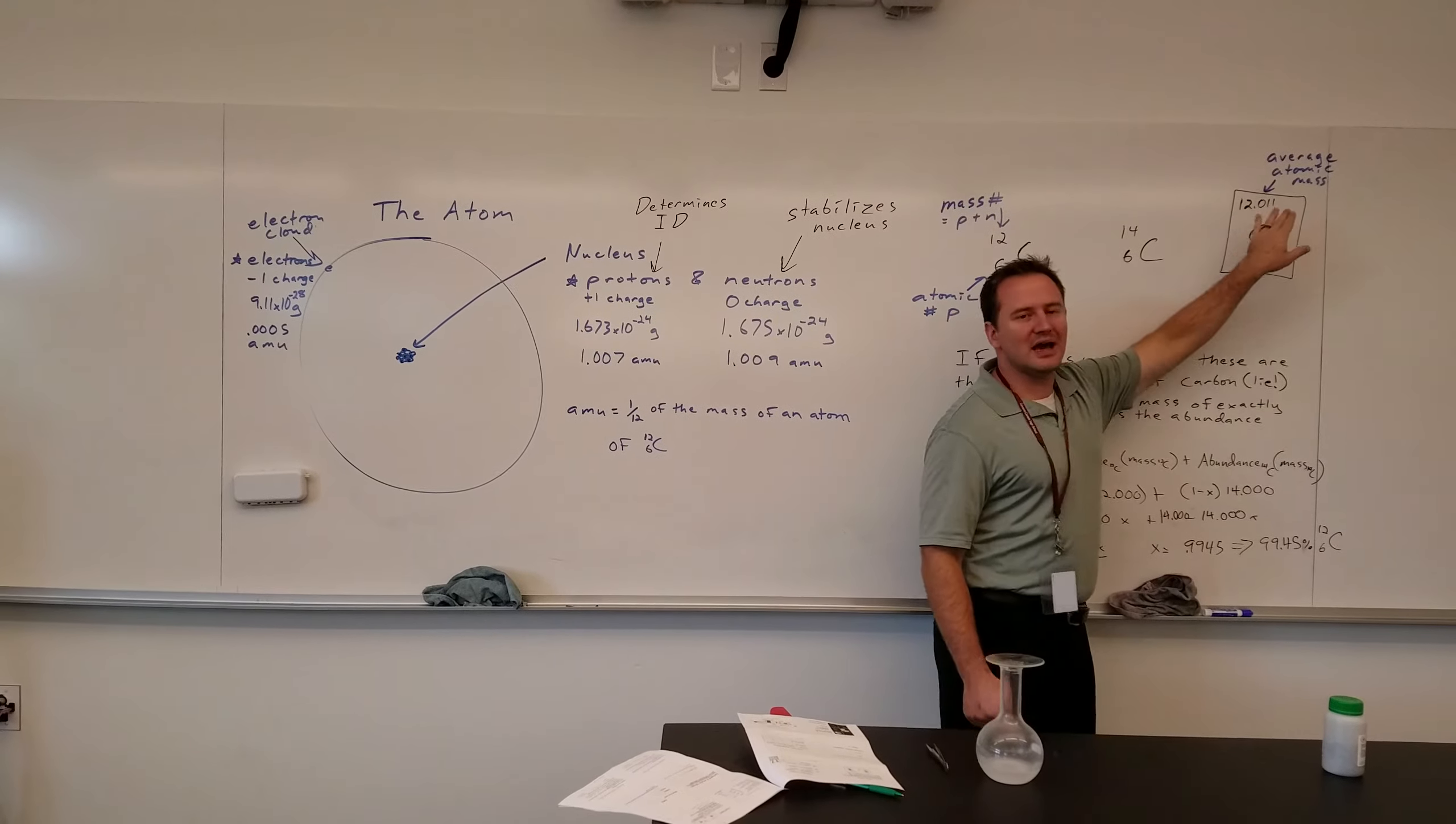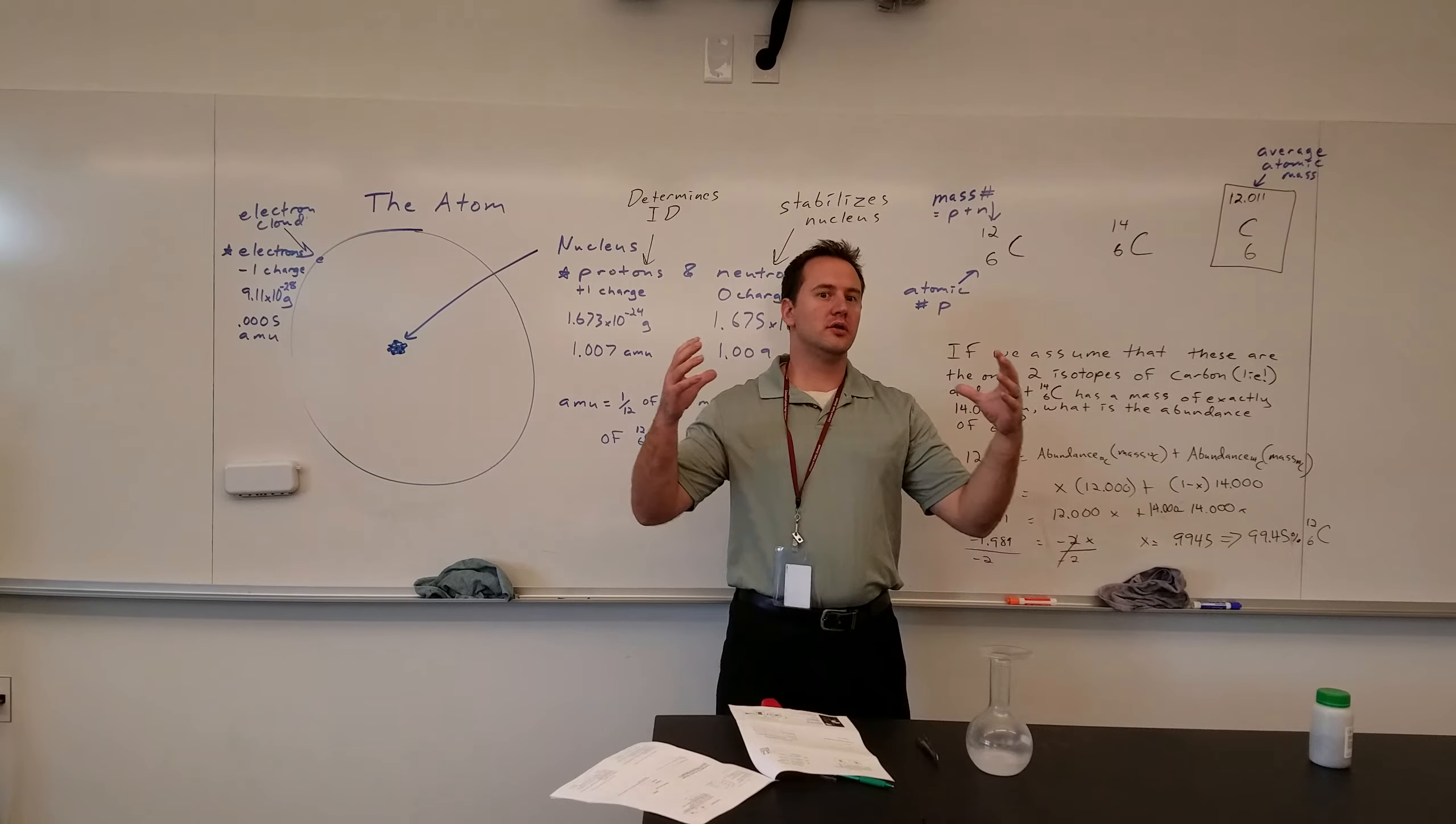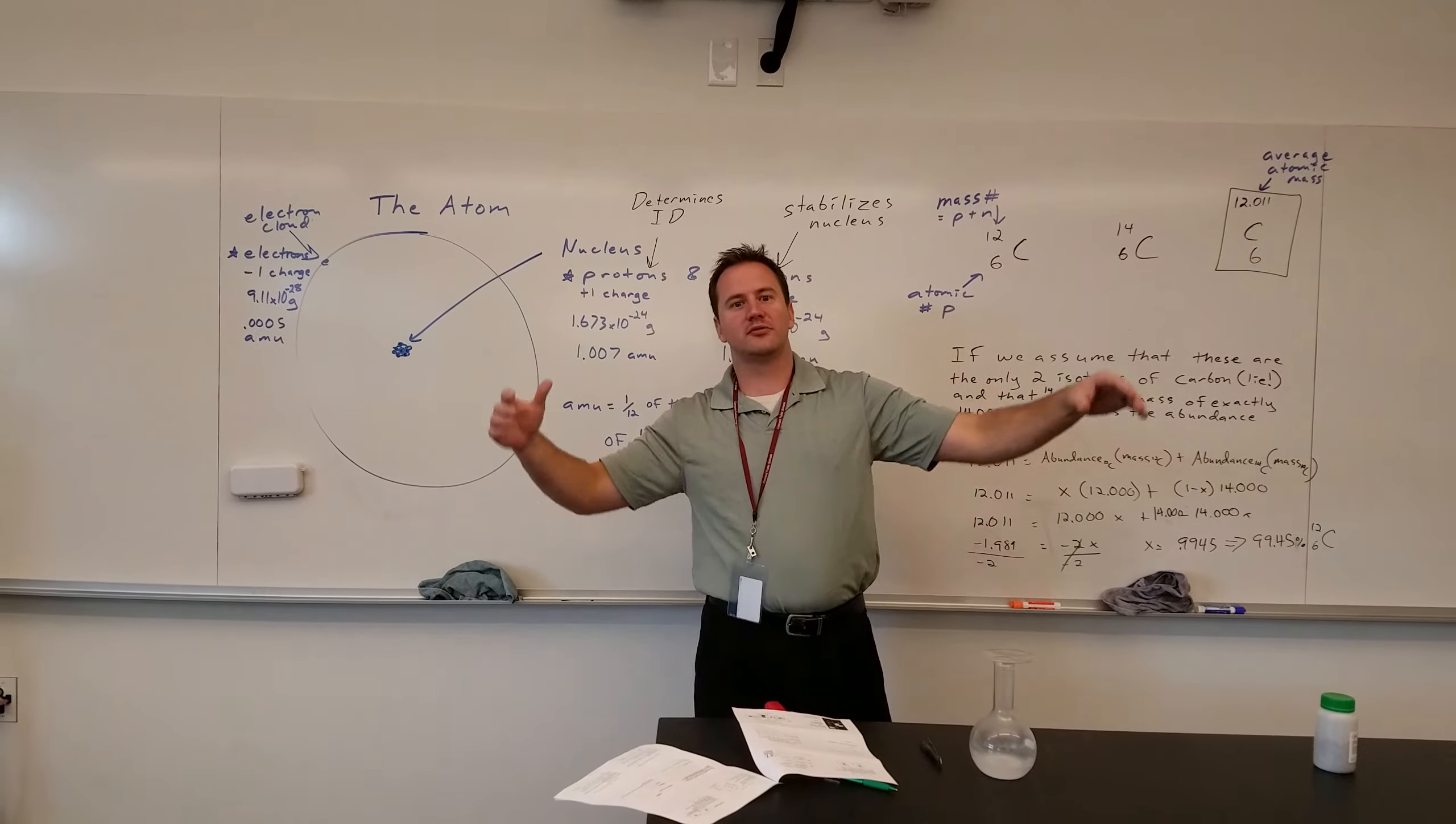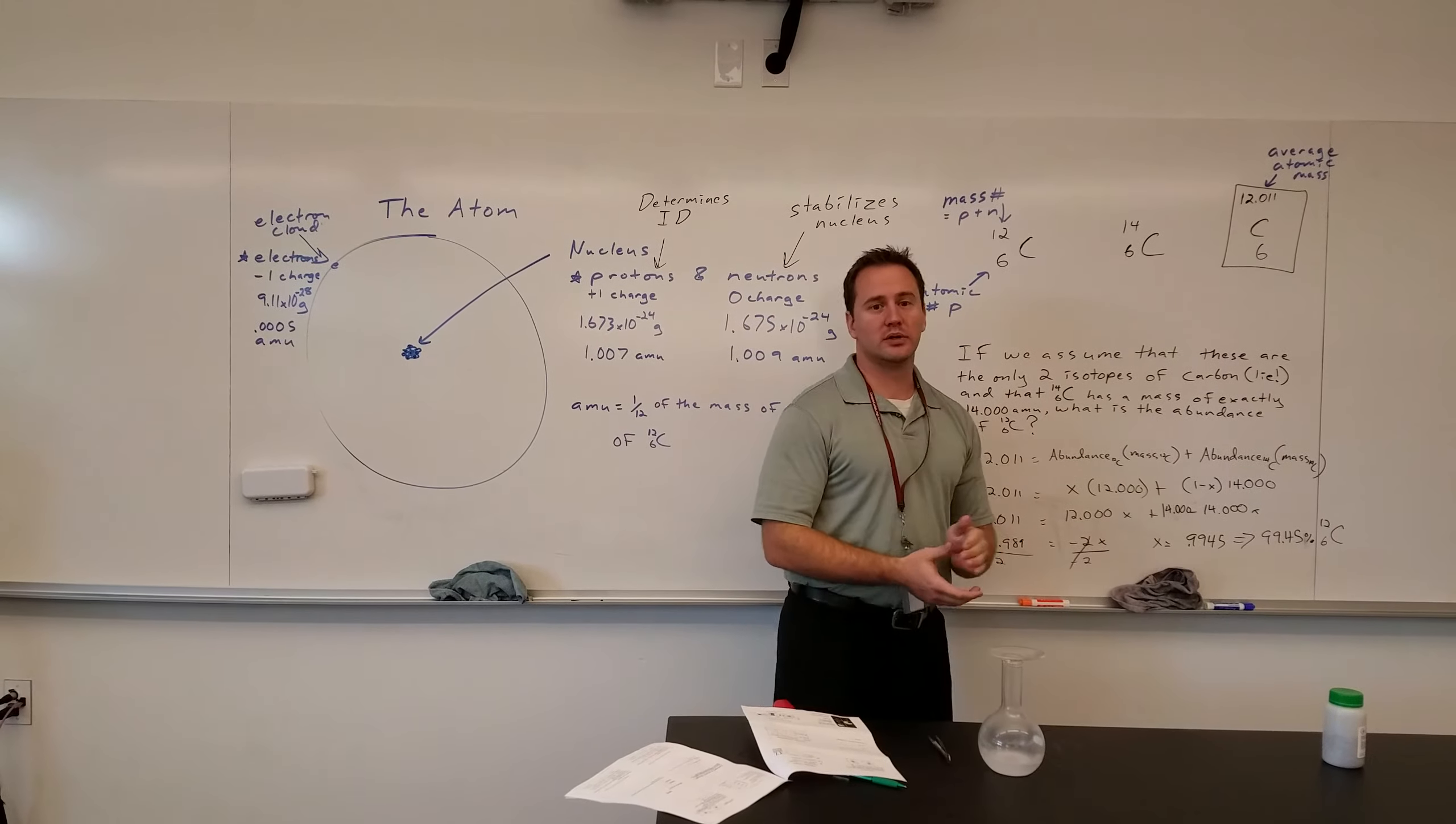And then you see this number that's not exactly 12. And where this comes from, this is the average atomic mass, which is the average of the masses of all of the isotopes. If you took all of the carbon atoms in the world, and took all of the isotopes, and you averaged out their masses, that is what you would get.